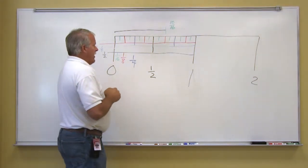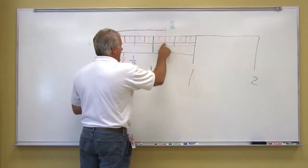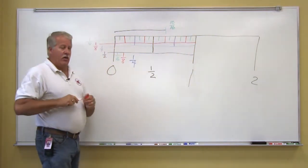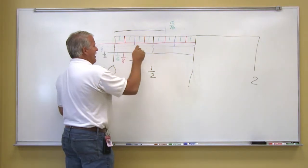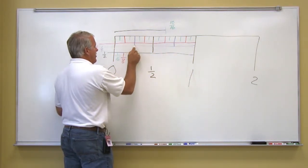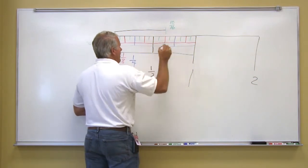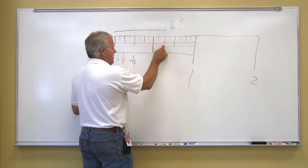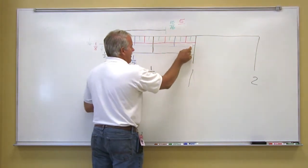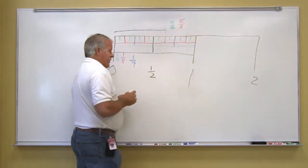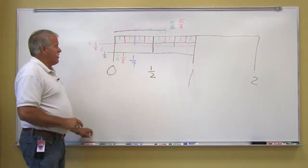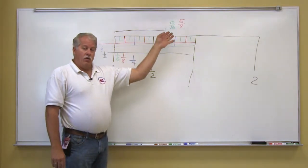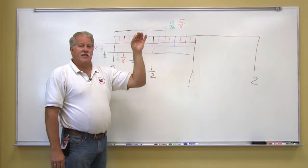However, we could have ignored the green marks because we landed on a mark that was this length, so we should have just counted that length of line and any line longer. We would have had one, two, three, four, five, six, seven, eight. So that would be five eighths. We don't want to designate that as ten sixteenths. Although that is correct, it's not in its simplest form.